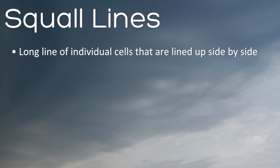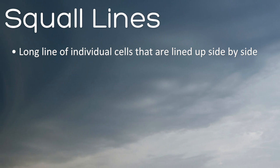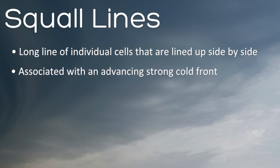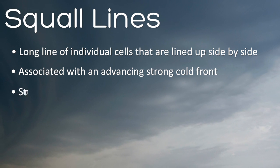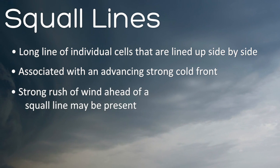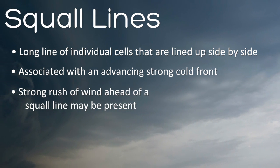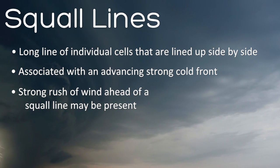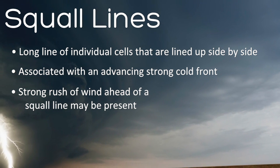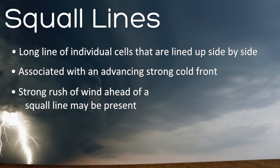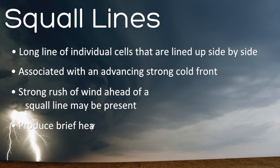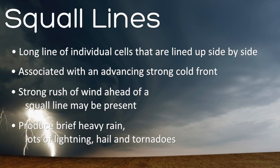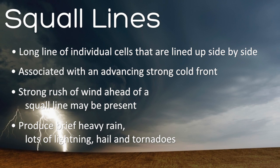Squall lines are a long line of individual cells that are lined up side by side. These can be associated with an advancing strong cold front. A strong rush of wind ahead of a squall line may be present, called a gust front. A gust front may have very strong winds with wind speeds of 60 mph or more. These storms can produce brief heavy rain, lots of lightning, hail, and tornadoes.